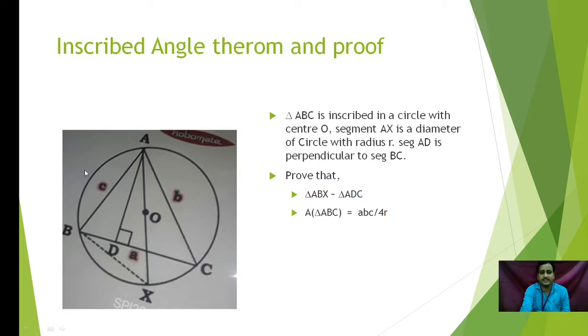Next, there is one question. Let me read this question for you. It is based on inscribed angle theorem. In triangle ABC, it is inscribed in a circle with center O. Segment AX is a diameter of circle with radius R. Segment AD is perpendicular to segment BC. This is the given. Now, what we have to prove? We have to prove that triangle ABX is similar to triangle ADC and also area of triangle ABC is equal to ABC divided by 4 times R. Now, look at the diagram. The sides are AB, BC and AC. Side AB is C. Side AC is B. Side BC is A. Now, we have to join BX.